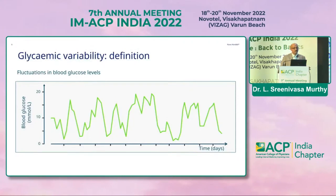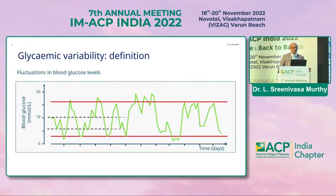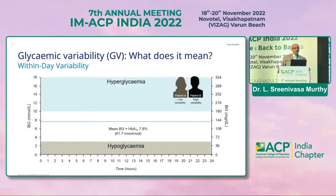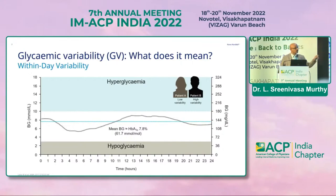We know the glycemic variability — this august gathering does not require an introduction. This is the disadvantage of glycemic variability wherein you see the peaks and troughs, which will not be measured in routine clinical practice without CGM. The within-day variability of hyperglycemia and hypoglycemia is missed. You can see two patients' profiles shown here as patient A.